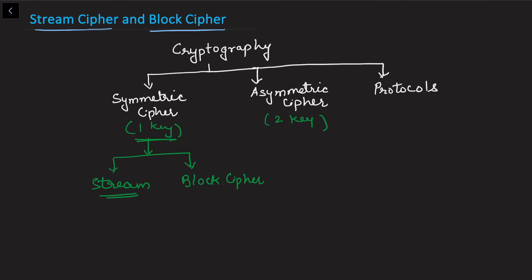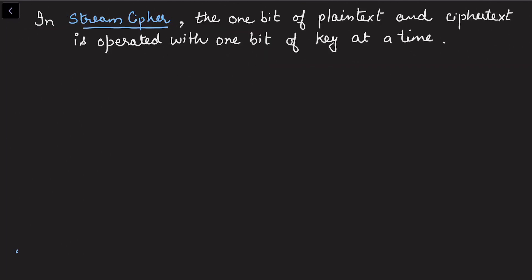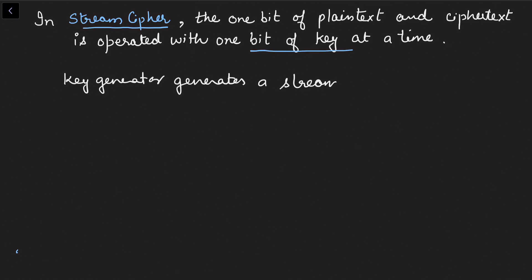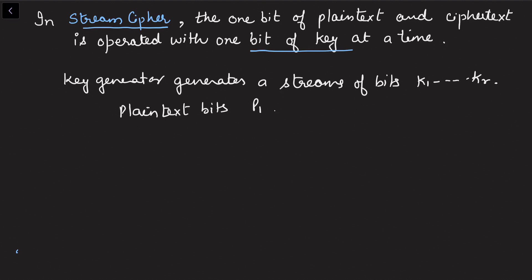In stream cipher, one bit of plain text and cipher text is operated with one bit of key at a time. A key generator produces a stream of bits k1, k2 up to kr. We consider the plain text bits as p1, p2 up to pr.